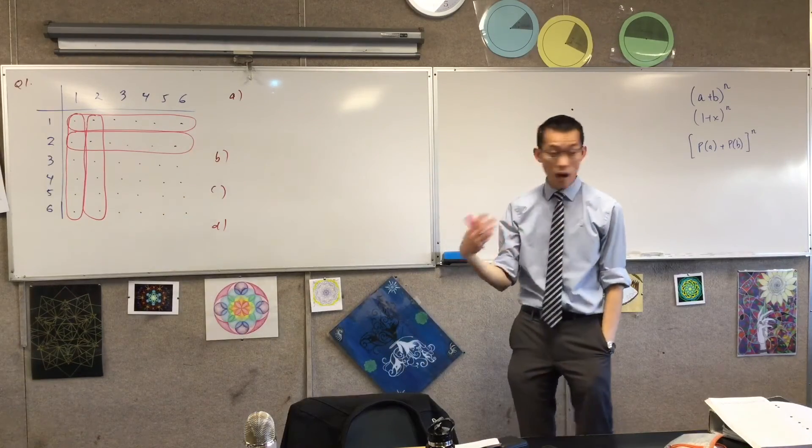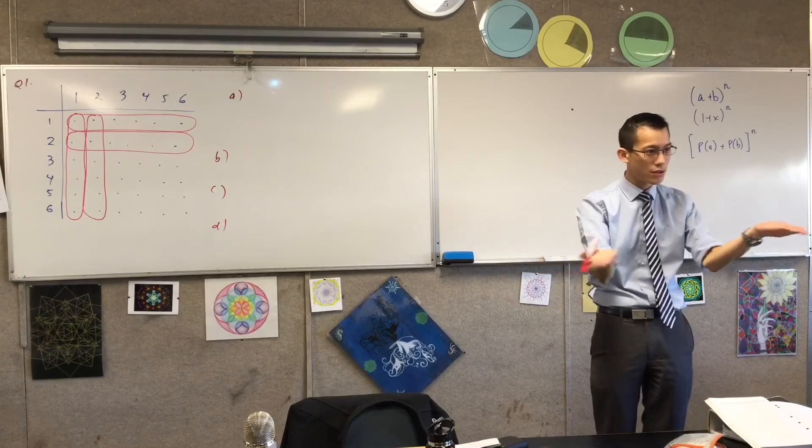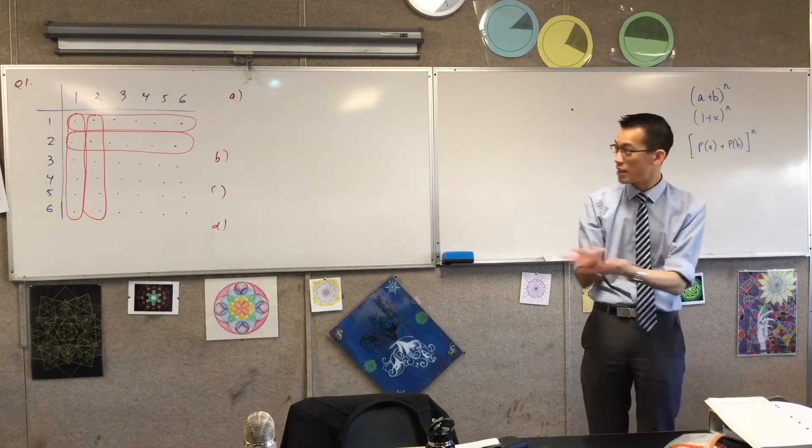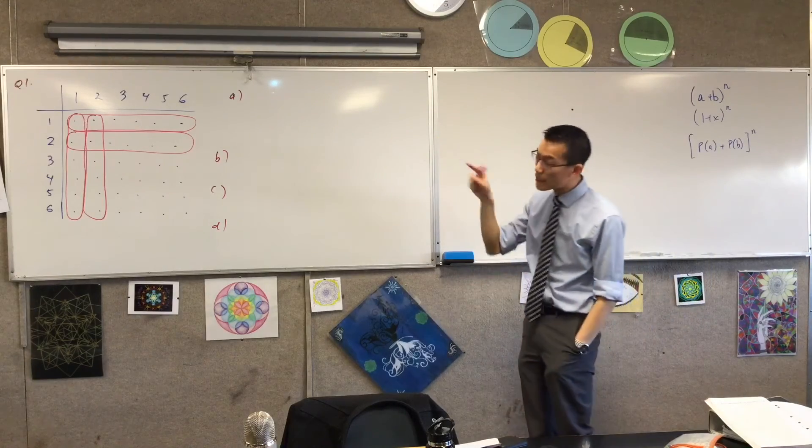there are 12 ways to get the one or two and one, and there are 12 ways on the other, but some of those are the same event, right? It's where you get doubles, a one and a one, two and two, et cetera. So how many dots have I circled?